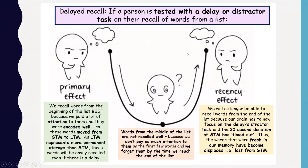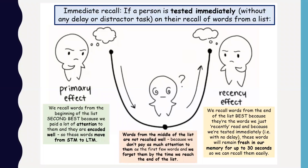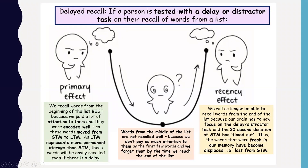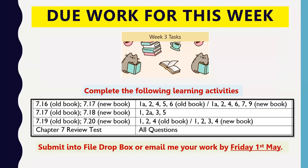In simple terms: tested with immediate recall — recency effect is best, primacy effect is still present. Tested with delayed recall — recency effect is eliminated, only primacy effect remains. That covers all the content for today.